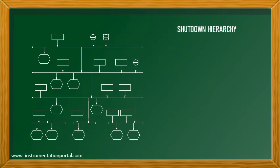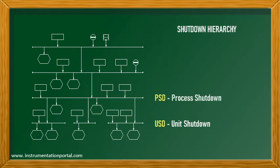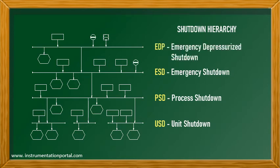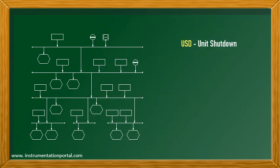In an oil and gas facility, there is a hierarchy of shutdown levels. Typically it consists of: USD or unit shutdown, PSD or process shutdown, ESD or emergency shutdown, and EDP or emergency depressurized shutdown. The initiation of a higher level shall cause lower level shutdown actions to occur. The most bottom level is unit shutdown.